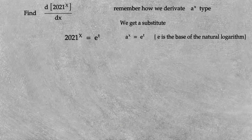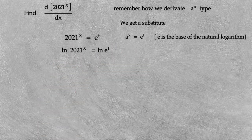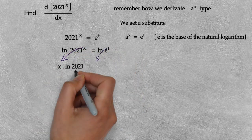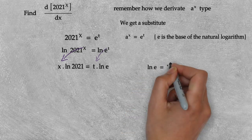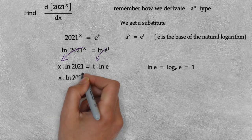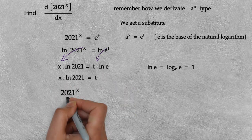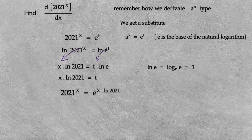Now we add the natural logarithm to both sides: ln of 2021 to the x power equals ln of e to the t power. We bring the exponents to the front using the logarithm power rule. We know ln(e) equals log base e of e, which equals 1, so we can write t in terms of x. Substituting t's value: 2021 to the x power equals e to the x·ln(2021) power.